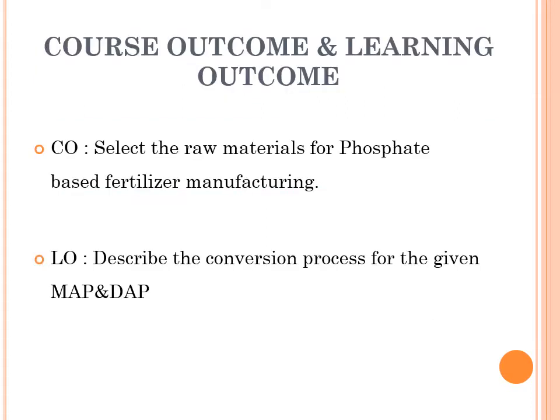The course outcome for this topic is to select the raw material for phosphate-based fertilizer manufacturing. At the end of the session, you will be able to describe raw materials, chemical reactions, and process flow sheets involved in manufacturing of ammonium phosphate, as well as properties and uses of ammonium phosphate. The learning outcome is to describe the conversion process for MAP and DAP — monoammonium phosphate and diammonium phosphate.